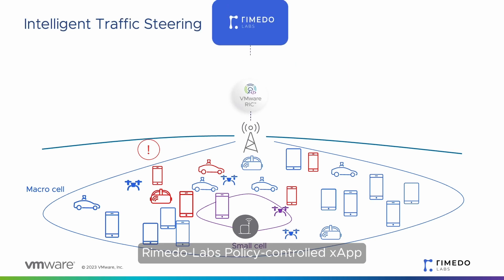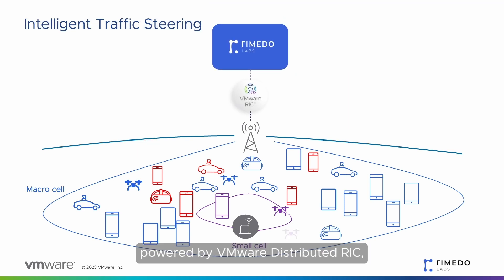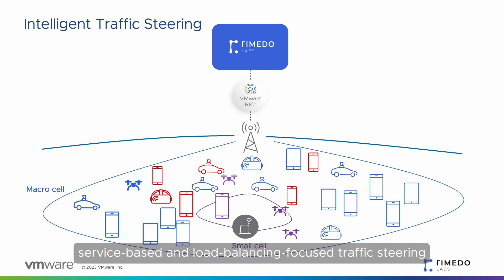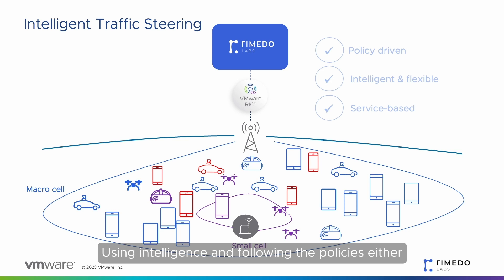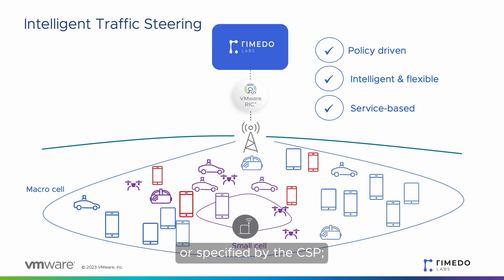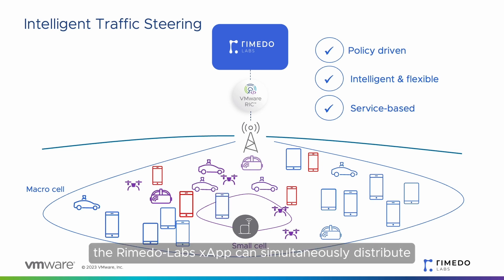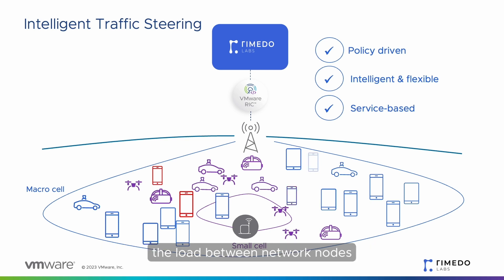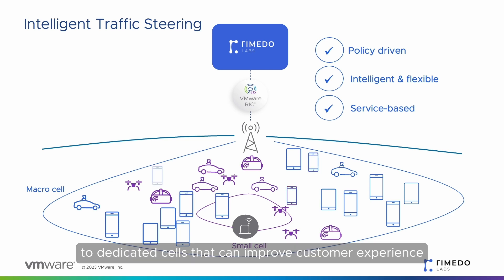Remedo Labs policy-controlled X-App, powered by VMware Distributed RIC, helps CSPs by providing service-based and load balancing focused traffic steering. Using intelligence and following the policies either automatically derived from the AI framework or specified by the CSP, the Remedo Labs X-App can simultaneously distribute the load between network nodes and offload specific traffic to dedicated cells that can improve customer experience.